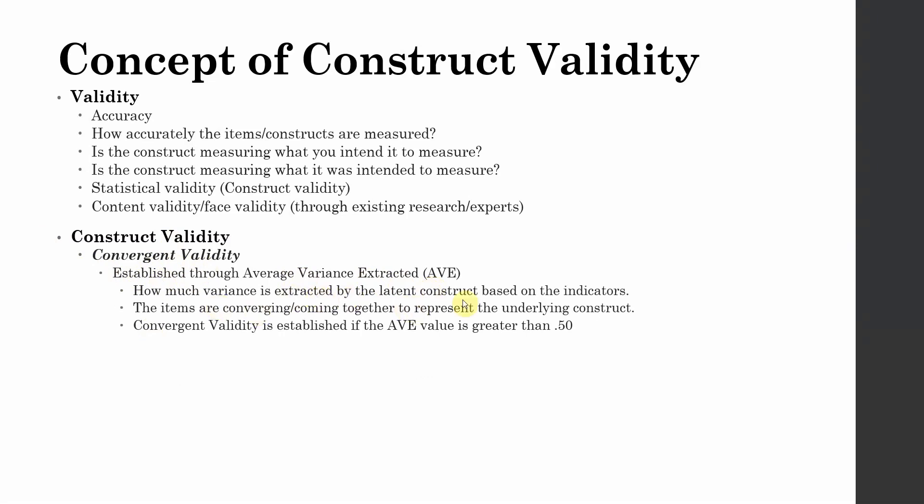How much variance is extracted by the latent construct based on the indicators? The items are converging or coming together to represent the underlying construct because those four, five, six, seven items are measuring the same latent variable. In order to establish convergent validity, those items shall come together to represent and measure that underlying construct.